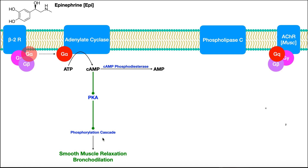One other important thing is that cyclic AMP, being a small molecule, also has to have a way to be degraded. It's degraded through this enzyme called cyclic AMP phosphodiesterase, which breaks down cyclic AMP into adenosine monophosphate or AMP, which is inactive. So ultimately what cyclic AMP phosphodiesterase does is it limits the amount of bronchodilation, because if we have less cyclic AMP being degraded, there's less activation of this phosphorylation cascade and therefore less bronchodilation.